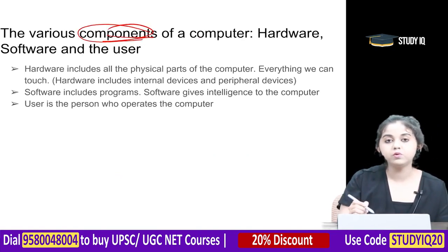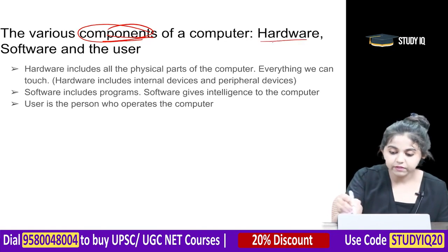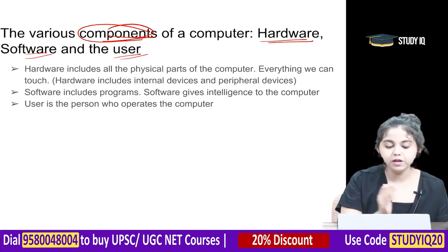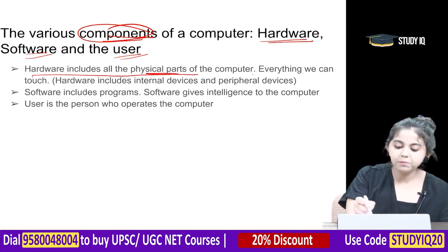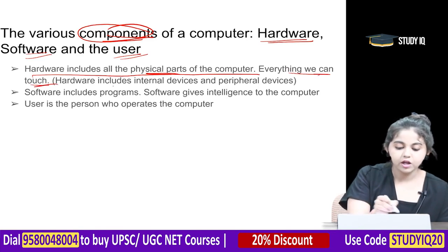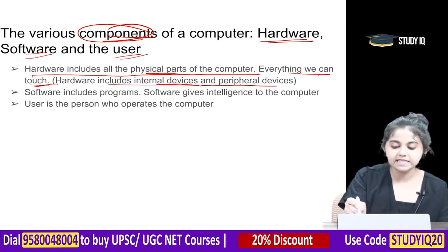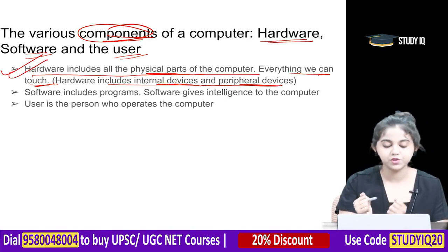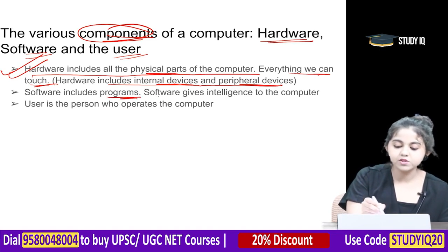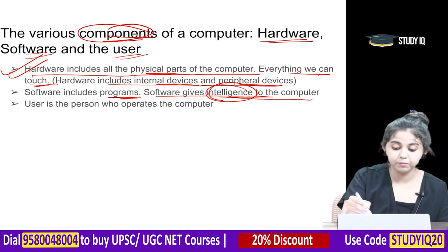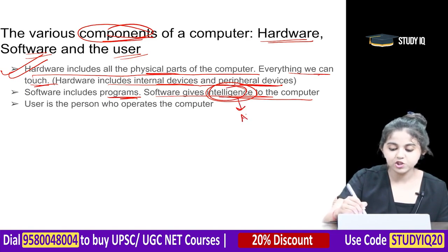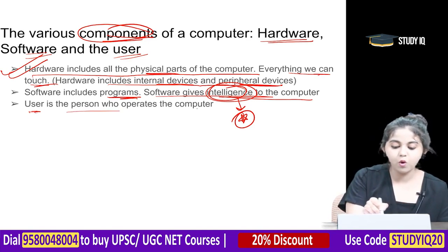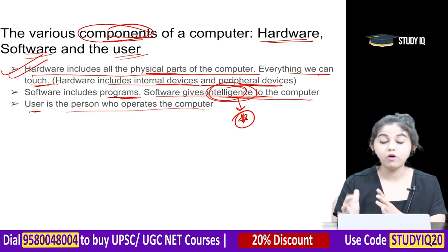The various components of a computer are hardware, software, and the user. Hardware includes all the physical parts of the computer — internal devices and peripheral devices. Software includes the programs and gives intelligence to the computer. The user is the person who operates the computer.